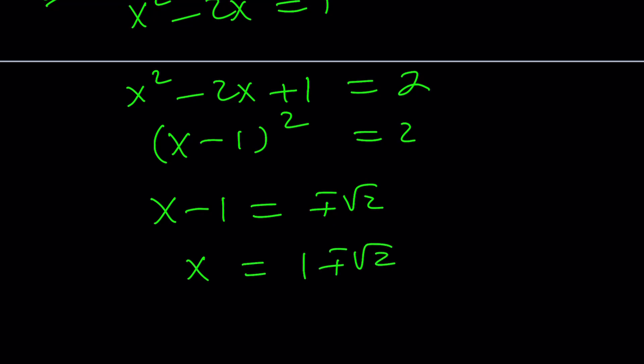We can then take the square roots and add one to get the solutions. This is how the quadratic formula works, by the way, by completing the square in the general form. You can prove it.